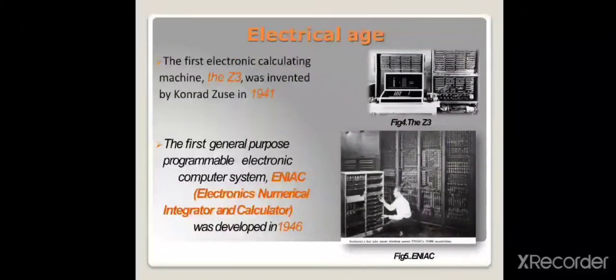The electrical age began with the first electronic calculating machine, the Z3, invented by Konrad Zuse in 1941. The first general purpose programmable electronic computer system was developed in 1946, called ENIAC, which stands for Electronics Numerical Integrator and Calculator.